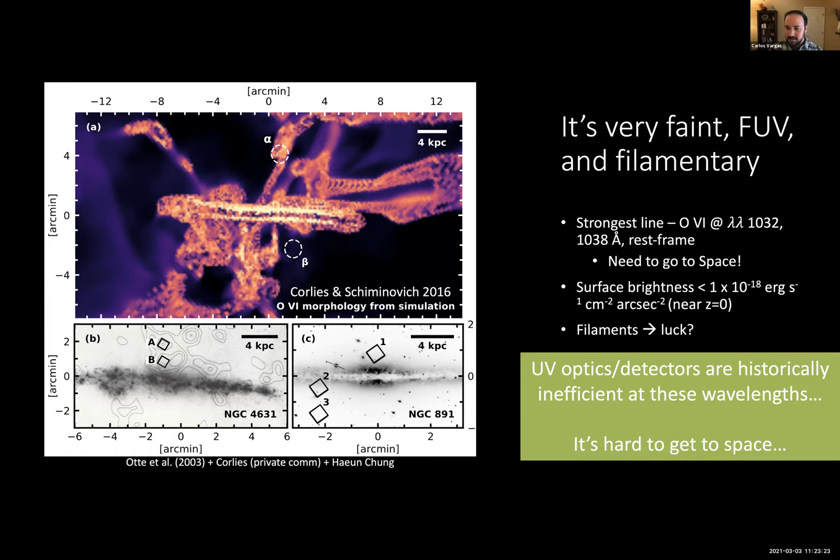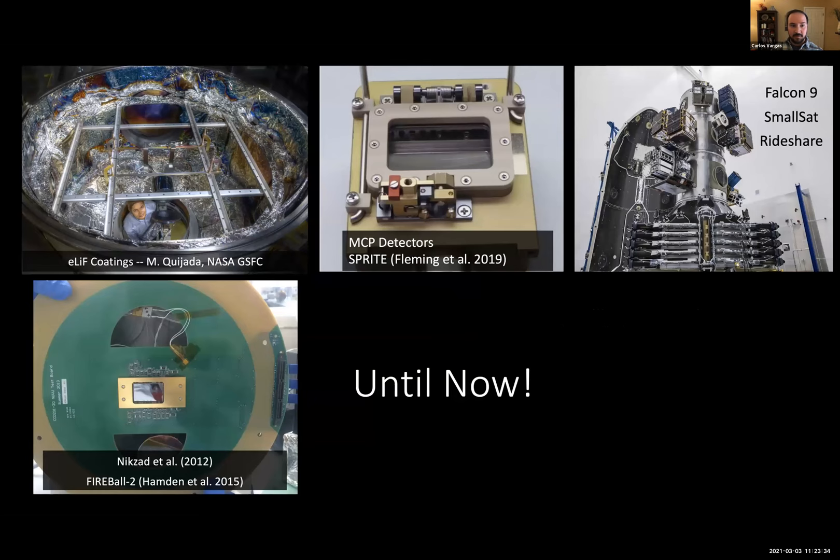So adding fuel to the fire here, UV optics and detectors are historically very inefficient at these wavelengths, which makes this very difficult. And it's incredibly difficult to get into space. Until now. So there have been some huge leaps and bounds in the last decade or two in technology and in accessibility to space.